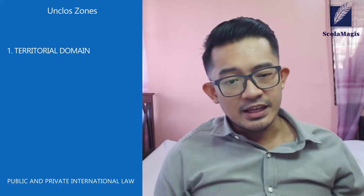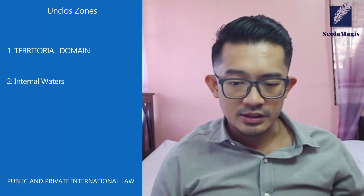Then you have internal waters — these are the bodies of water within the boundaries of a state, or those so closely linked to its land domain that they are considered legally equivalent to national land. These include rivers, lakes, landlocked seas, canals, and polar regions.